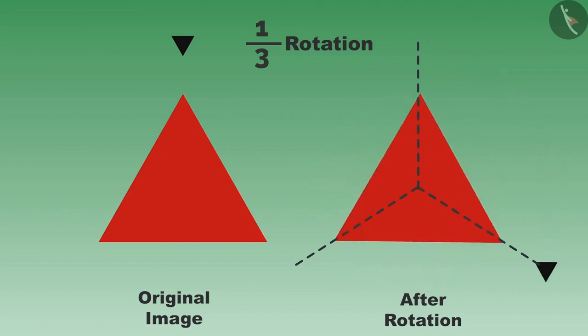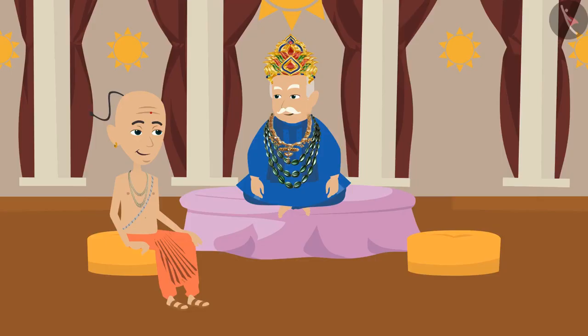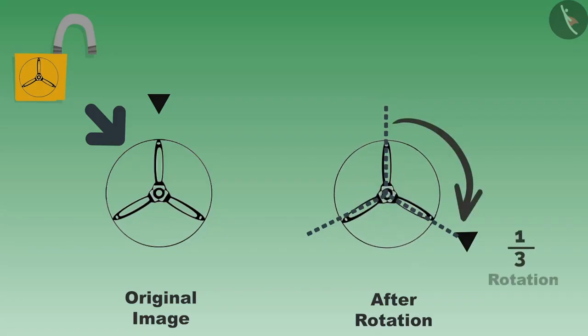Now let us notice the objects around us with one-third and one-sixth rotation. Also, we will see how Tenali Rama helped King Krishnadevaraya and the kingdom. Use this concept to close this lock. One-third rotation was needed, then only it used to close.